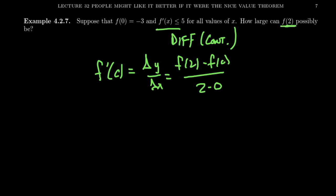That's the last instance of the function we have any data about. Can we make a prediction what's going to happen two units later? f of 2 we don't know what it is, so we'll just leave it alone for the moment. But f of 0 we do know, that's going to be negative 3. 2 minus 0, of course, is 2.